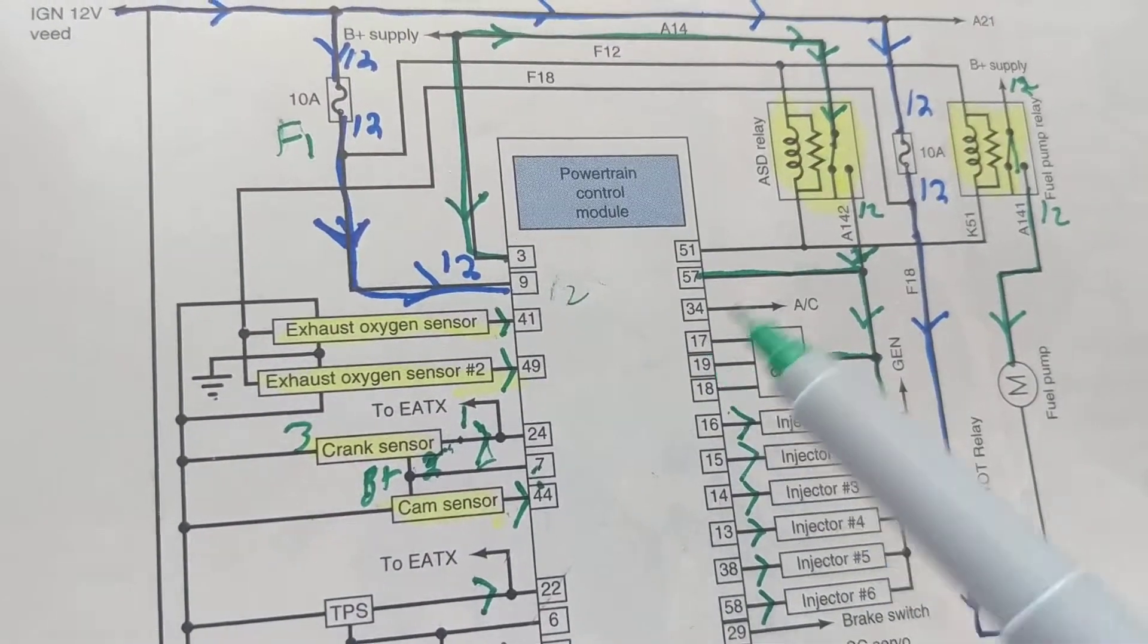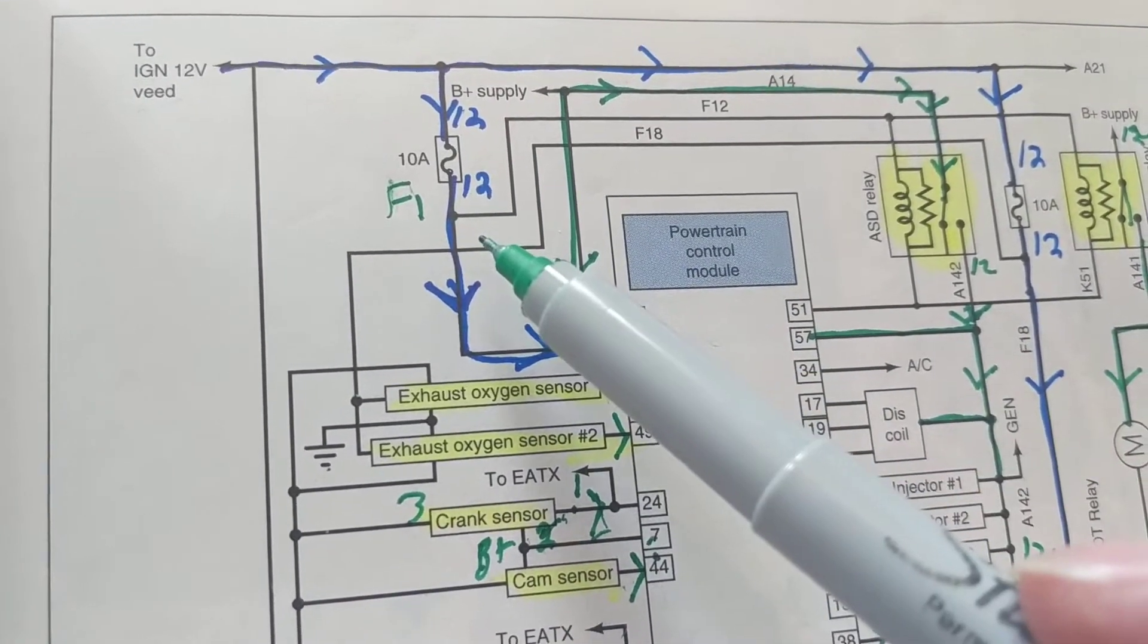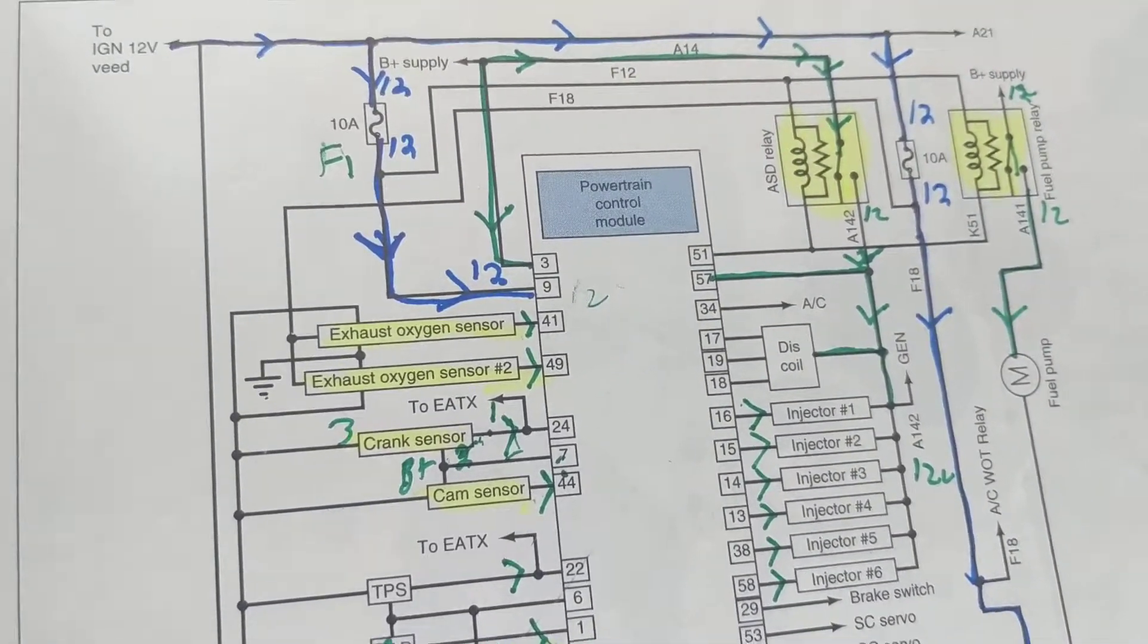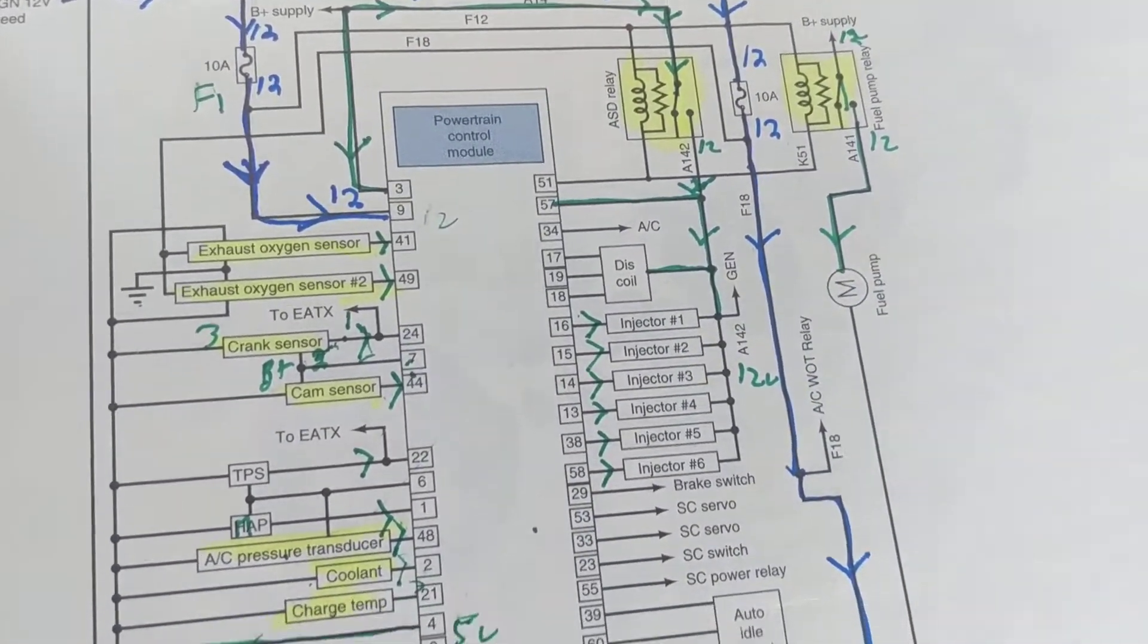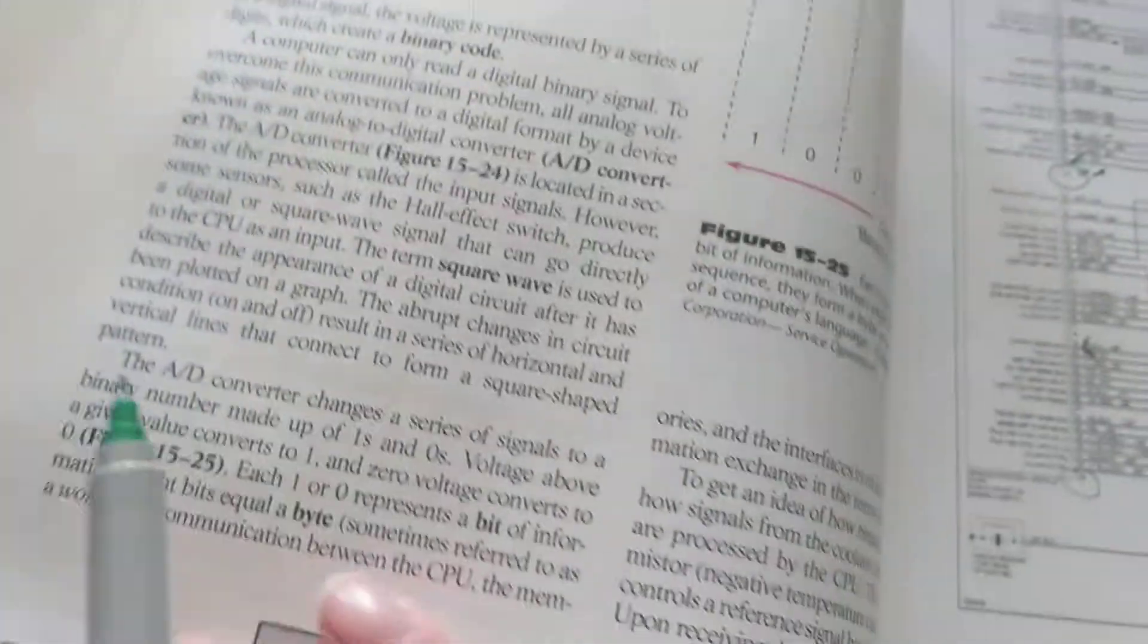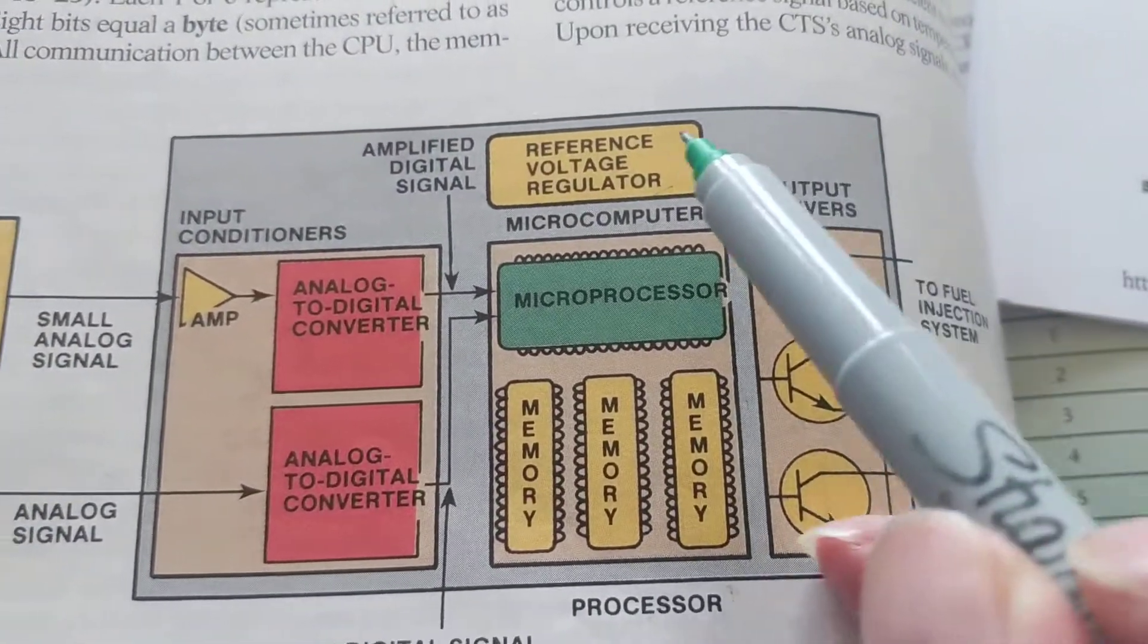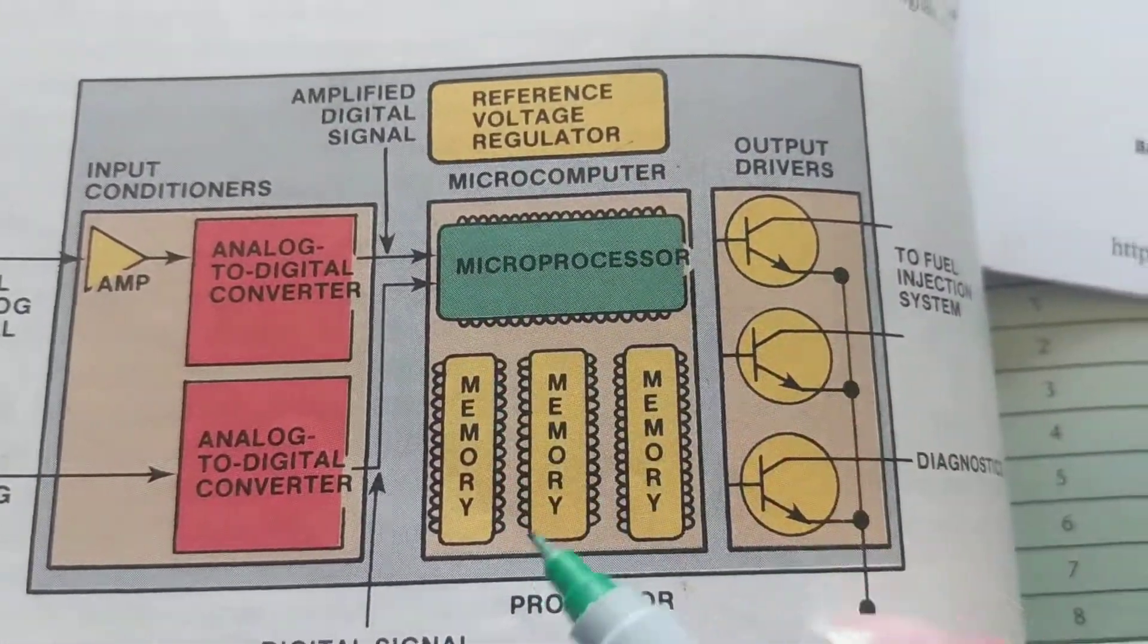The fuse is blown, so obviously you lose the module itself. Now getting to the module over here, there's a better pictorial in the textbook. The textbook can explain better than I can. In this pictorial layout, you see this is the processor, a microprocessor or microcomputer.